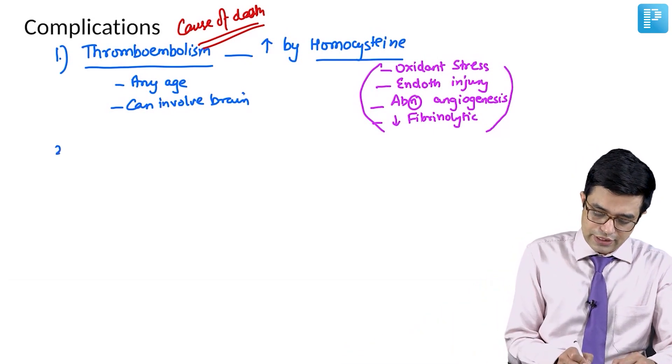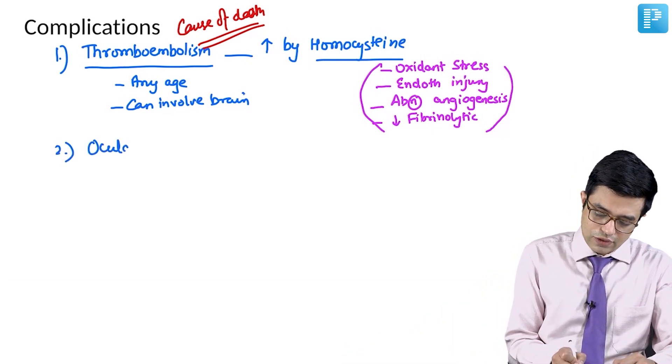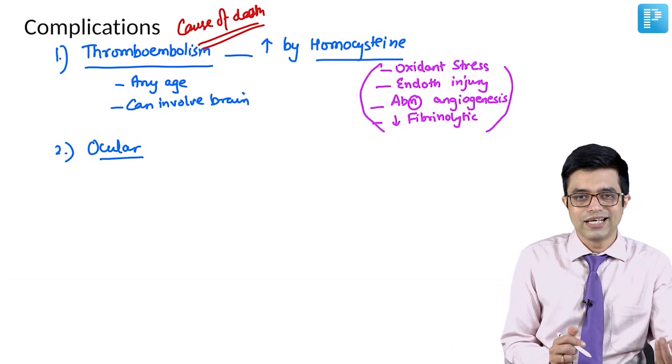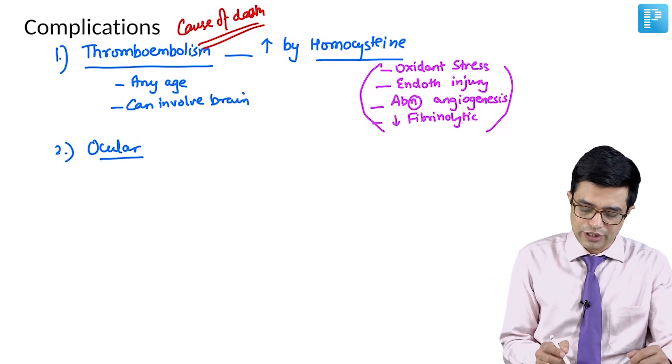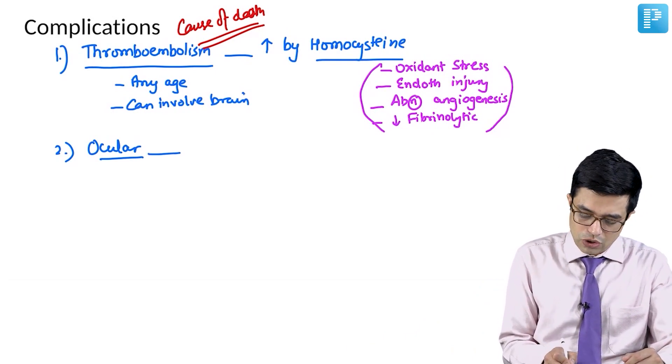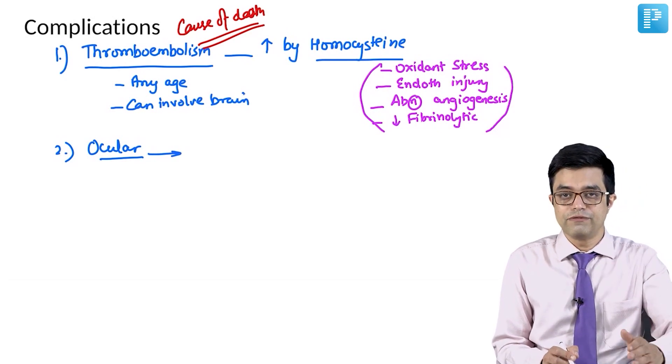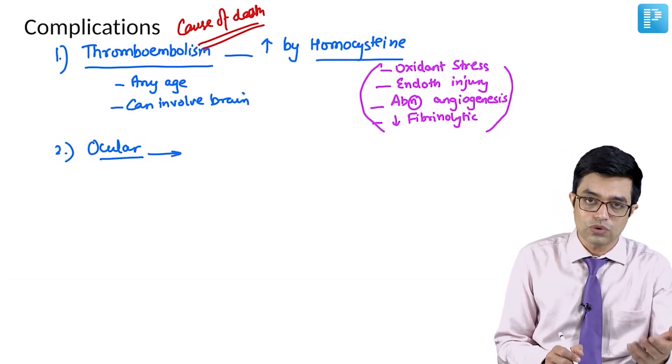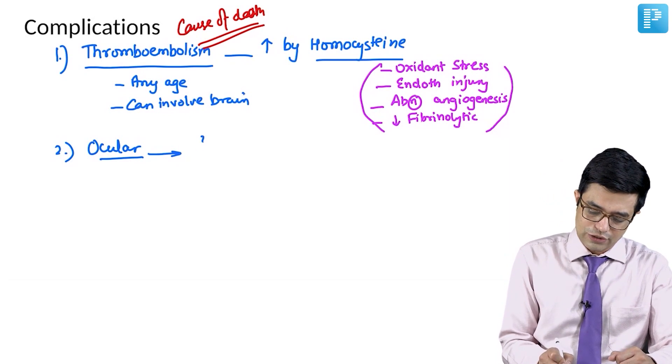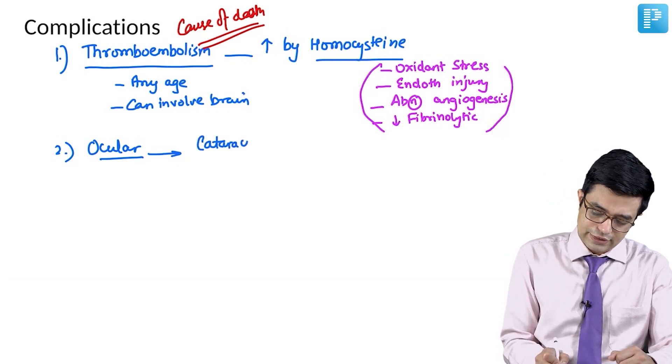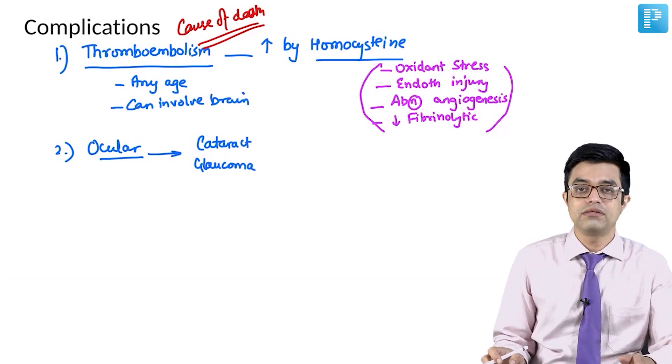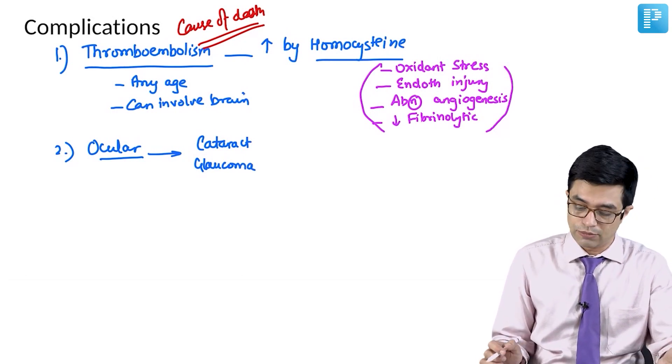The second complication are related to the ocular complications, long-standing neglected ectopia lentis. What it will lead to? It will lead to multiple, not only ectopia lentis causing vision problems, you can have other ocular complications also as well. They may have cataract, they may have glaucoma. The risk of these complications is increased three to five times as compared to general population.